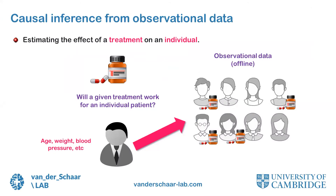The problem setup that we are dealing with is the problem of causal effect inference from observational data. In this setup, we have a certain intervention, which can be a treatment or some policy action. We have a set of subjects, each with individual features and traits — such as the age, weight, and blood pressure of a patient, or the consumption behavior of a customer. We would like to estimate the effect of a certain intervention on individual patients on the basis of observational data.